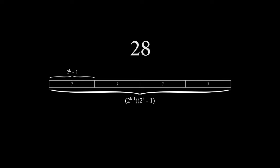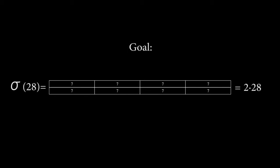But remember what our goal is. We want to show that 28 is a perfect number by showing that all of its factors add up to 56, which is 2 times 28.